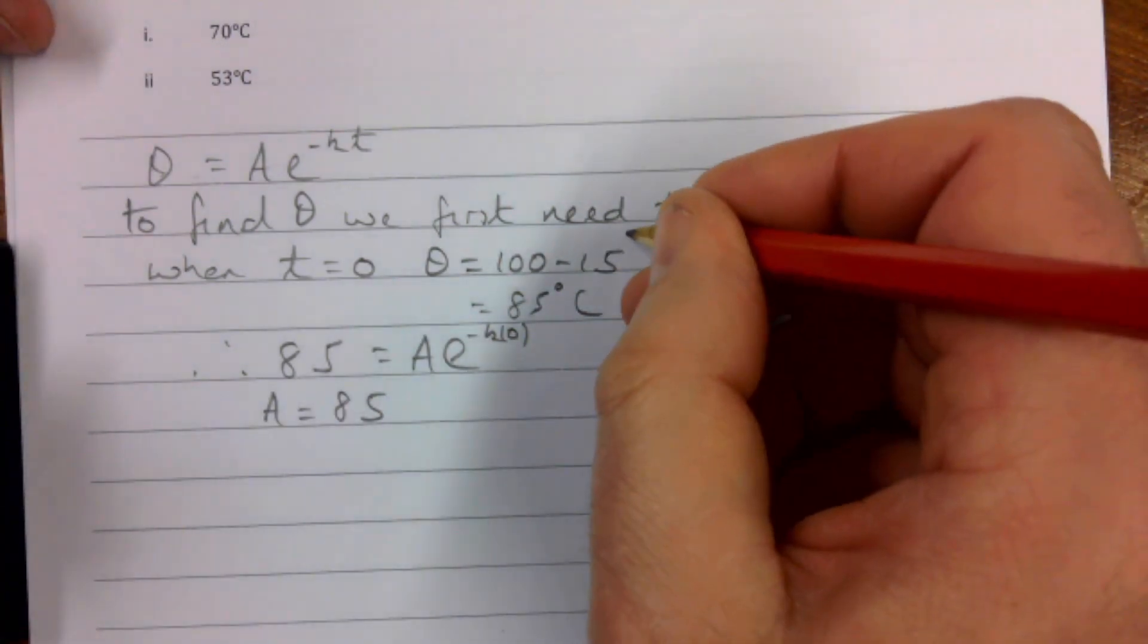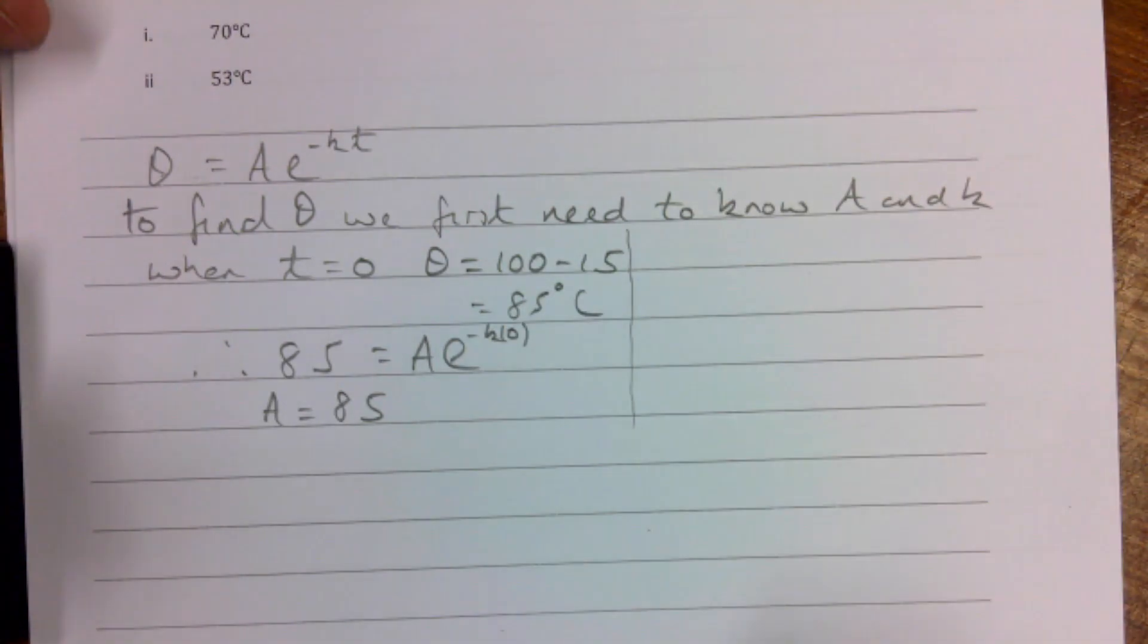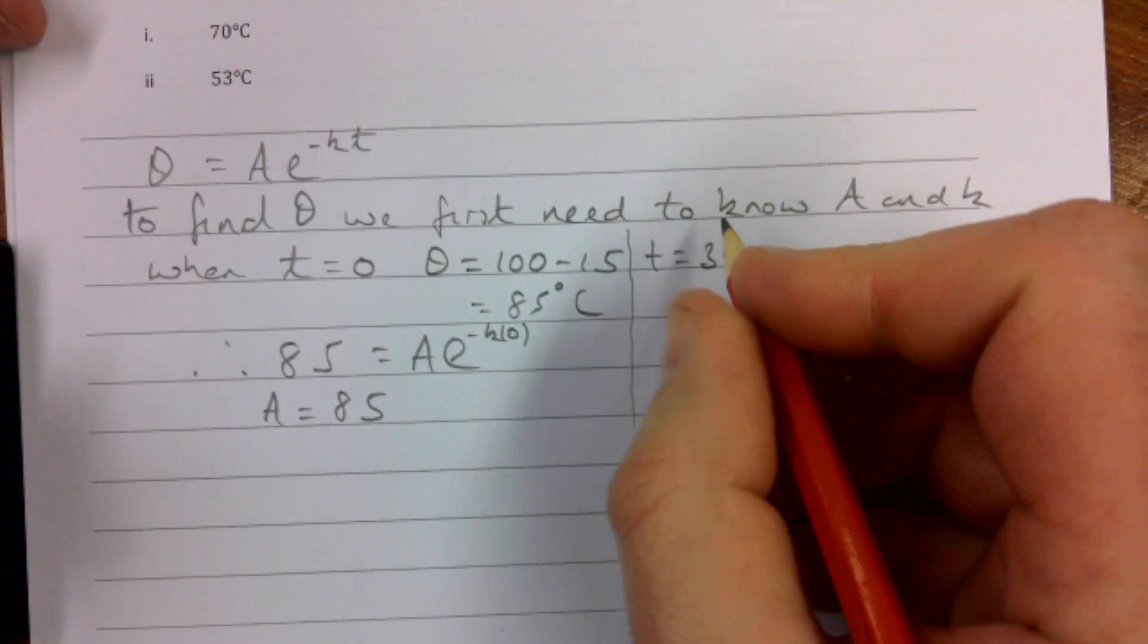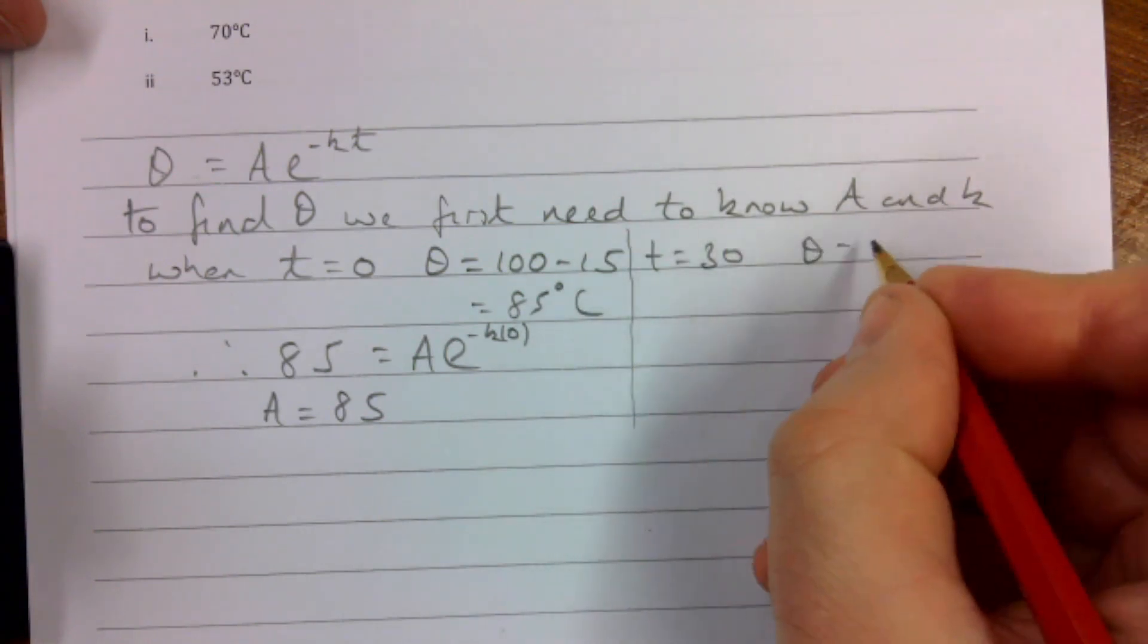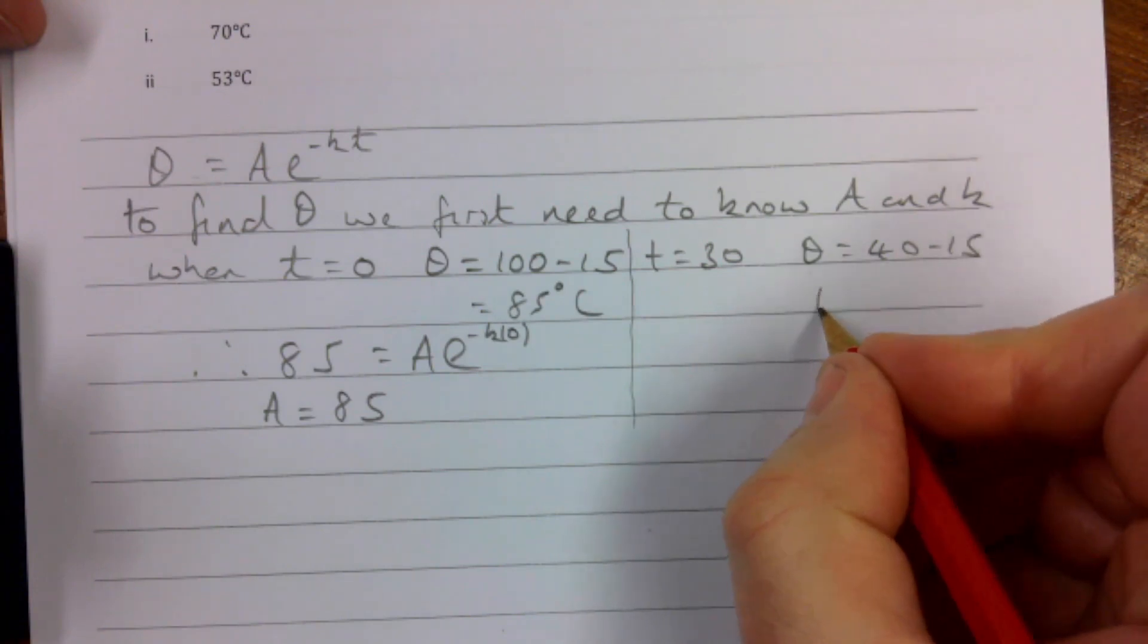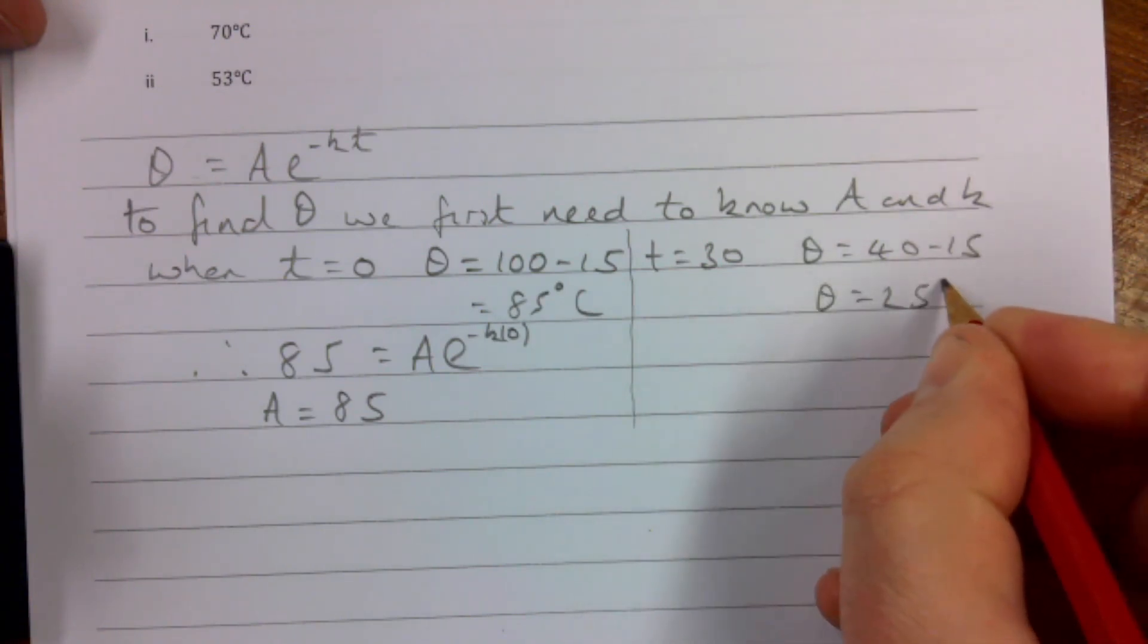The other piece of information we know is that whenever t is 30, then θ is 40 - 15. So θ is 25°C. And this one's more awkward to work out but that's okay.